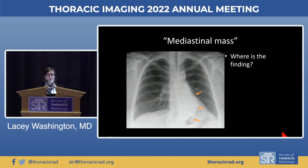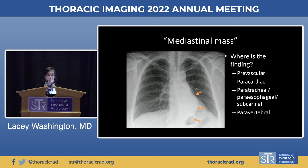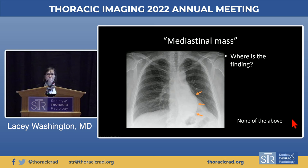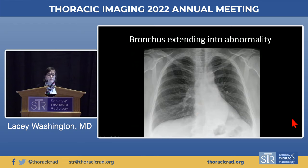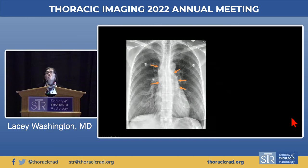Another mass-like opacity you might be tempted to call posterior because it's outlined by air very posteriorly, down behind the dome of the diaphragm. But it doesn't have to be in the mediastinum just because it projects over the mediastinum. If you look carefully, the left main bronchus extends right into this lesion — this is an example of left lower lobe collapse, not a mediastinal mass. Always look at all structures, not just the interfaces.